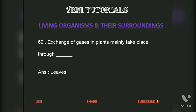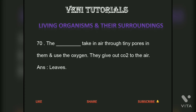Exchange of gases in plants mainly takes place through dash. Answer: Leaves. The dash take in air through tiny pores in them and use the oxygen. They give out CO2 to the air. Answer: Leaves.